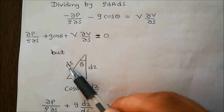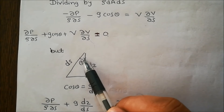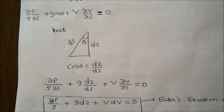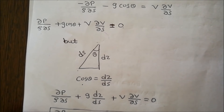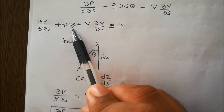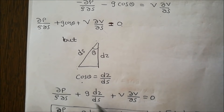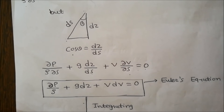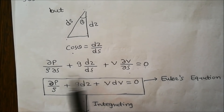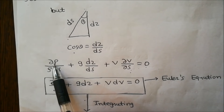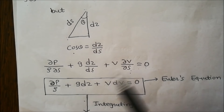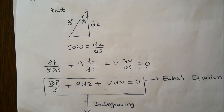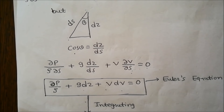As shown in the figure, the element has length dS and height dz, with angle θ, so cos θ = dz/dS. Substituting: ∂P/(ρ·∂S) + g·(dz/dS) + V·(∂V/∂S) = 0. Multiplying through by dS: dP/ρ + g·dz + V·dV = 0. This is Euler's equation of motion.